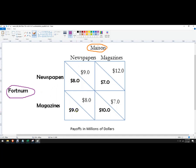Next, if Mason chooses to do magazines, what's better for Fortnum? We're comparing this one with this one, and since ten million is better than seven million, they should go ahead and do magazines too.